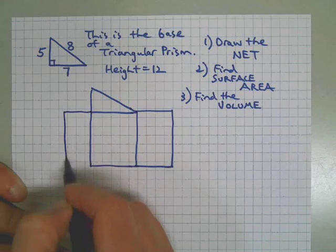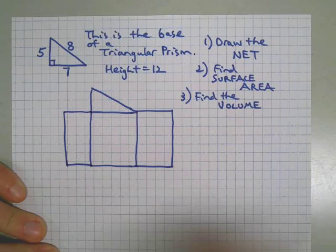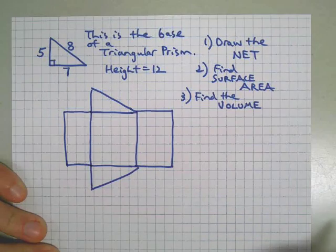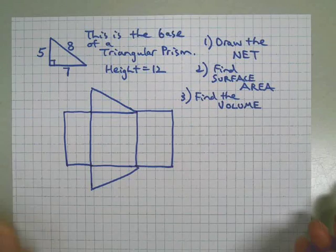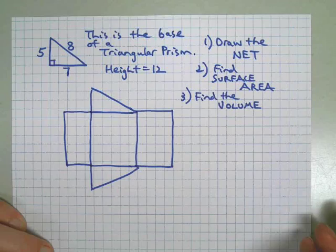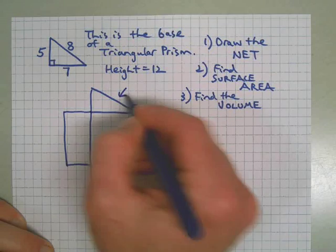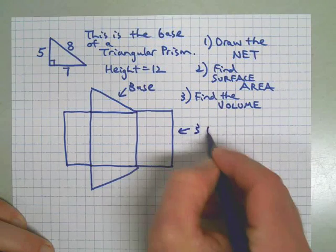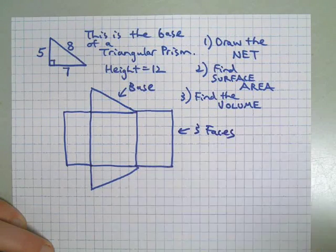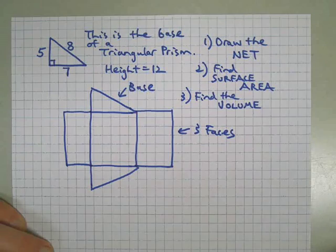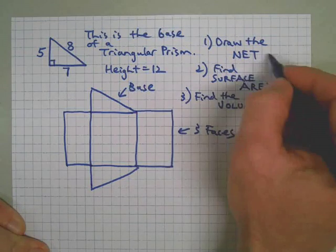Then I draw another base down here, and I've got the five sides, the five surfaces of a triangular prism. Remember, the top and bottom are both called bases, and then we have three faces. The faces are the rectangular sides of prisms.